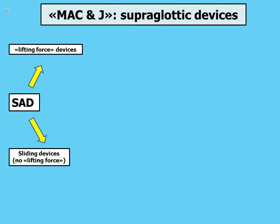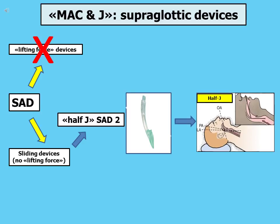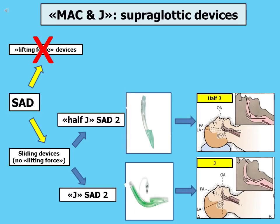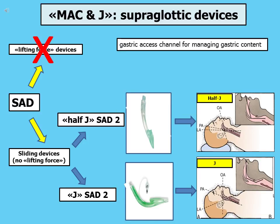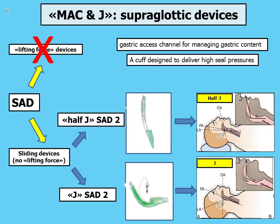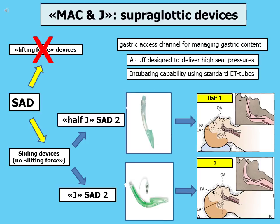There are also different kinds of supraglottic devices. Supraglottic devices are only sliding devices — they don't need your lifting force when you introduce them to obtain patient ventilation. As you can see, there are half-J-shaped supraglottic devices for half-J position and J-shaped supraglottic devices for J position. The MAC and J model suggests using only second-generation supraglottic devices, which have three major characteristics: the possibility to obtain gastric aspiration, a cuff designed to deliver high seal pressures, and an intubating capability using standard tubes to switch from supraglottic to tracheal airway management.